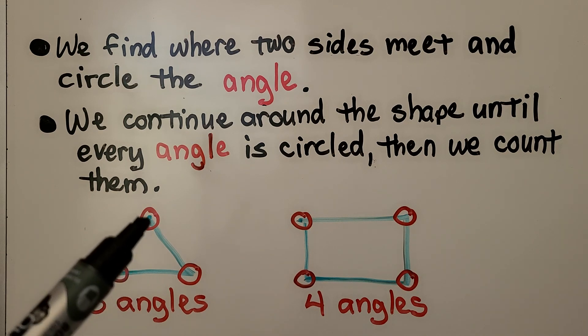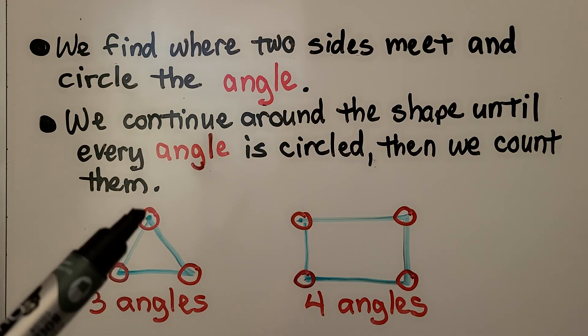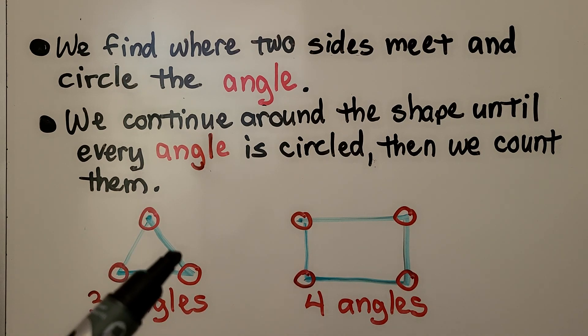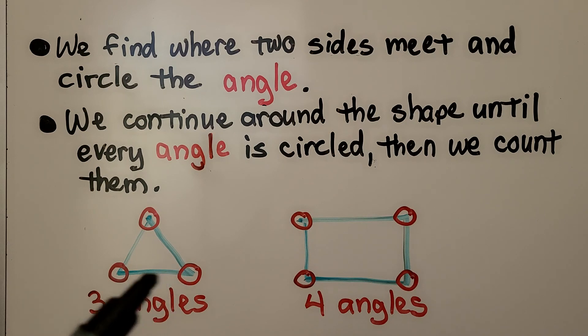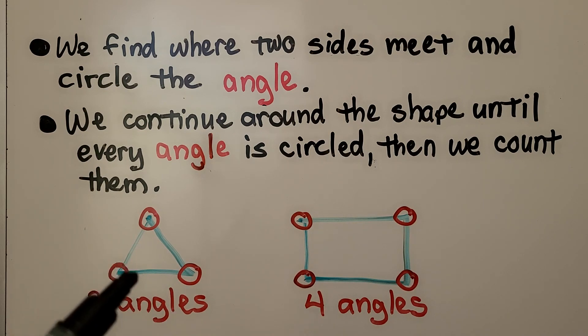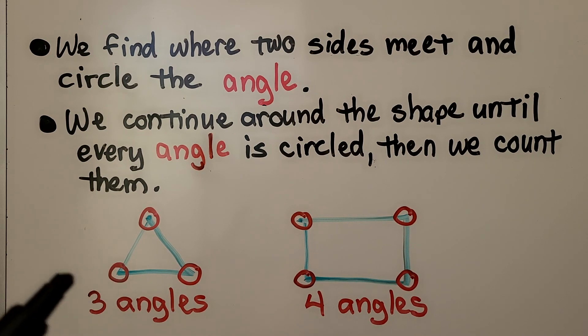Two sides are meeting here — we make a circle. This side and this side are meeting here — we make another circle. This side and this side are meeting here — we make another circle. We have one, two, three angles.